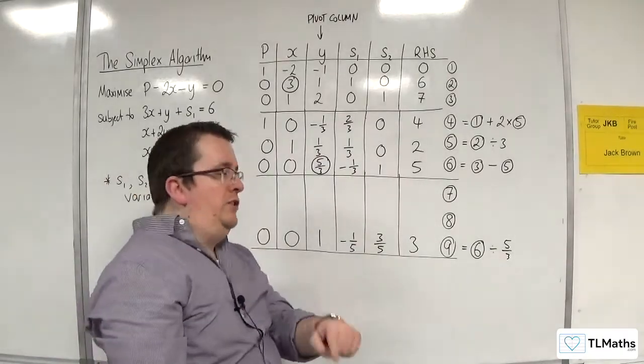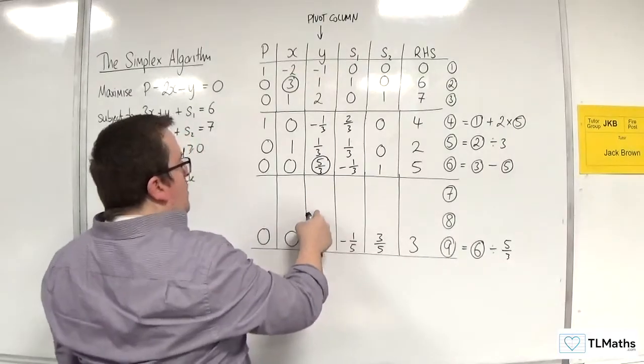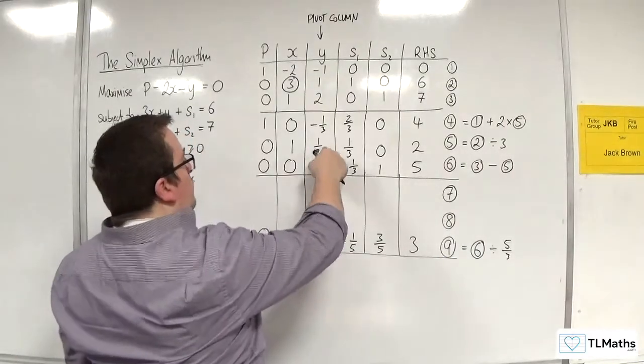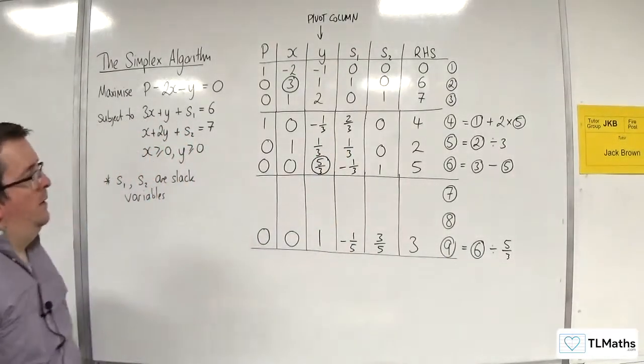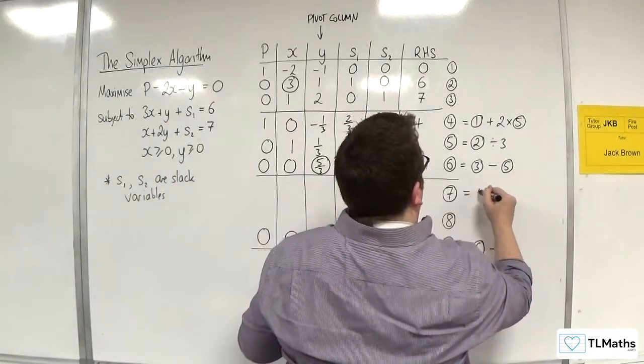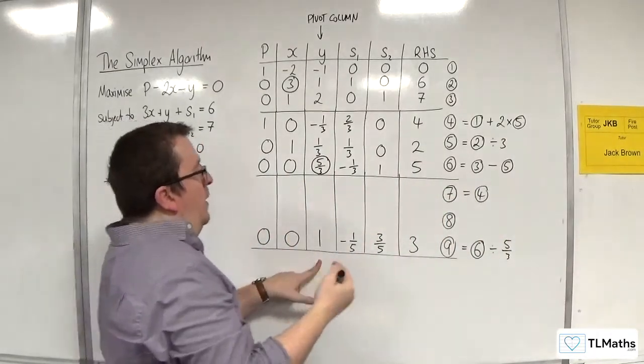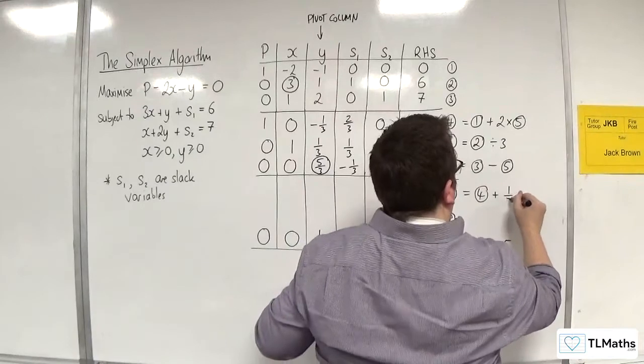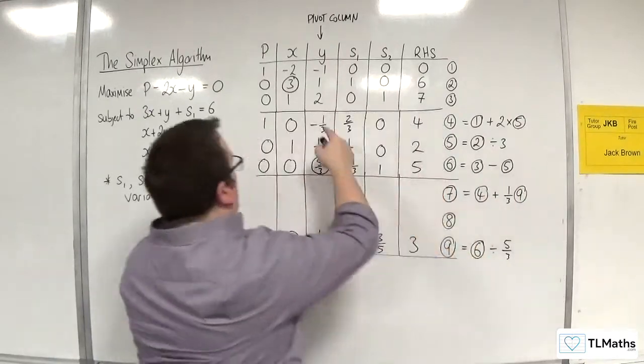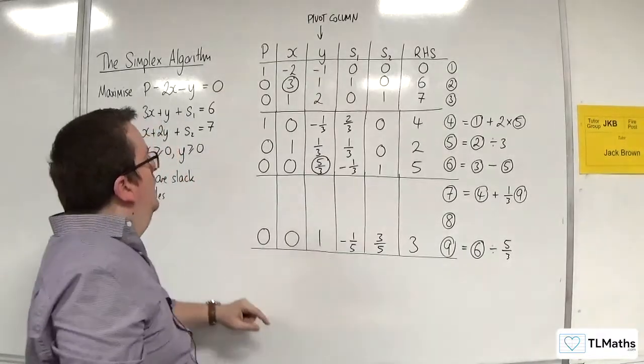So now I'm going to use that row to make that 0 and that 0. So I'm going to eliminate the 1 third and the minus 1 third. So for equation 7, it's the new equation 4, but I need to add on a third of equation 9. Because I want minus 1 third plus 1 third of 1.